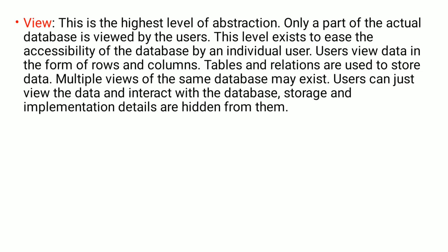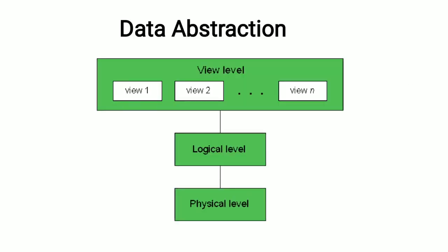At the view level, a specific view of the record is allowed. For instance, a customer can view the name or ID of the employee but cannot access the employee's salary, address, or other details. There is specific permission — only a particular part of the record is accessible.